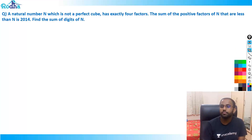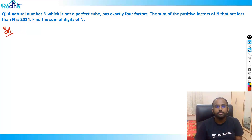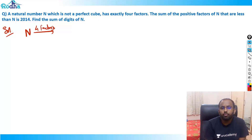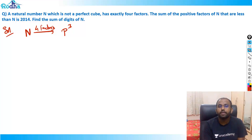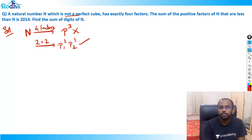Now let's move to the next question. A natural number n, which is not a perfect cube, has exactly four factors. The sum of the positive factors of n that are less than n is 2014. Find the sum of digits of n. Now, a number with exactly four factors must be of the form p³ (giving factors 1, p, p², p³) or p1 × p2 (two distinct primes). Since n is not a perfect cube, p³ is ruled out.